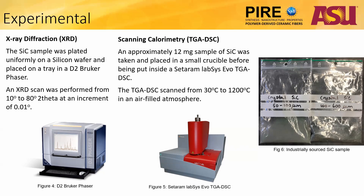The SiC sample was uniformly plated on a silicon wafer and placed on a tray in the XRD. The XRD used was a Bruker D2 Phaser and it performed a scan of the sample from 10 degrees to 80 degrees 2-theta at an increment of 0.01 degrees. For the TGA-DSC, roughly 12 milligrams of the SiC sample was placed in a small crucible before being put inside the TGA-DSC. This project used a Setaram Labsys EVO to scan the SiC sample from 30 degrees to 1200 degrees in an air-filled atmosphere.